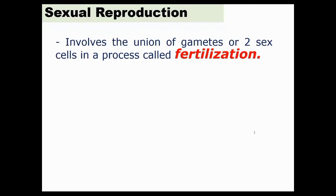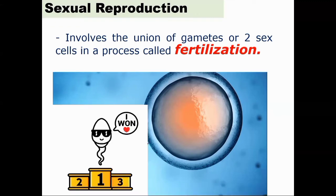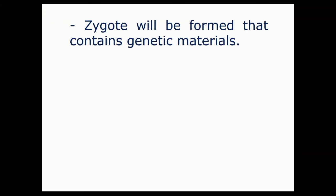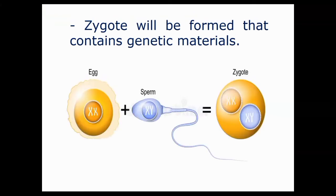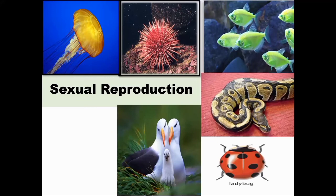Another important thing to remember about sexual reproduction is that this process involves the union of gametes or sex cells in a process called fertilization. Hundreds of millions of sperm cells race to fertilize the one egg cell, and only one sperm cell will be declared the winner. After the union of male and female gametes, the zygote will be formed, containing genetic materials inherited from both parents and a total of 46 chromosomes — 23 from the mother cell and 23 from the father cell or sperm cell. Other organisms that use sexual reproduction, other than humans, include jellyfish, sea urchins, fish, snakes and other reptiles, insects, birds, and mammals.